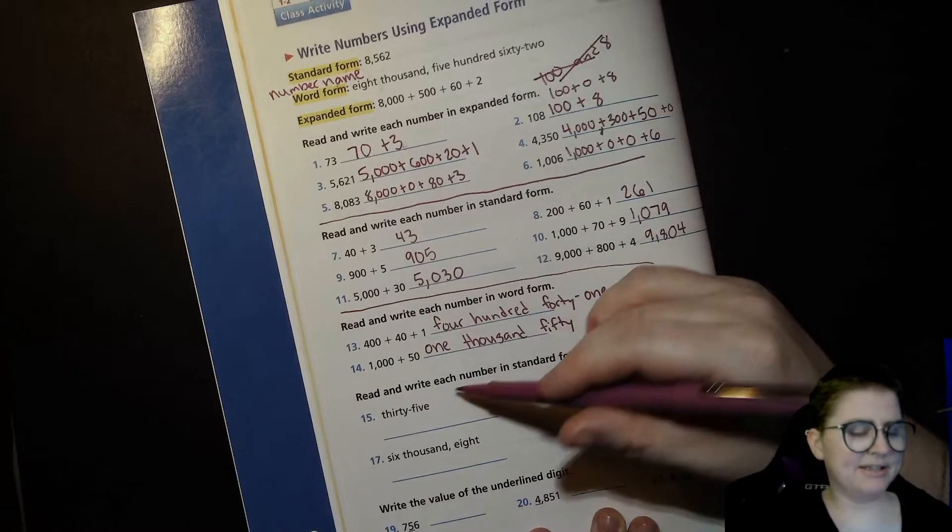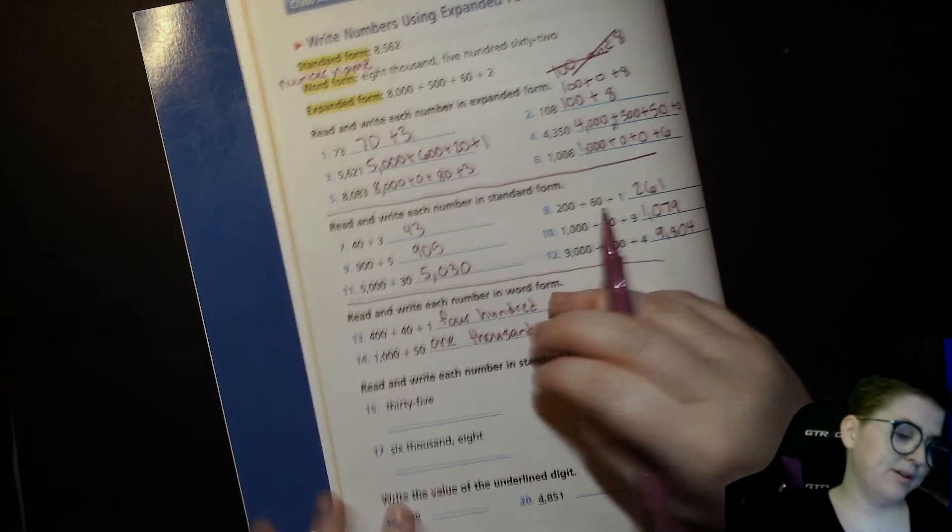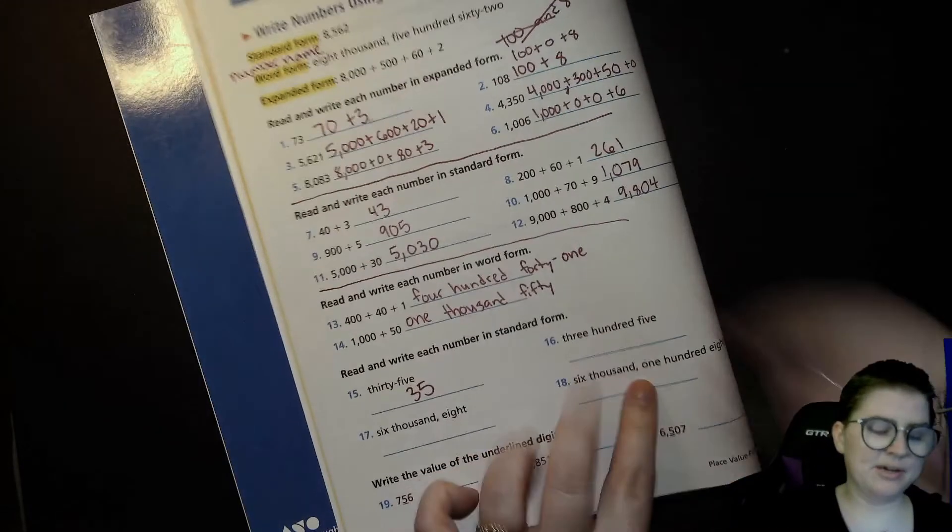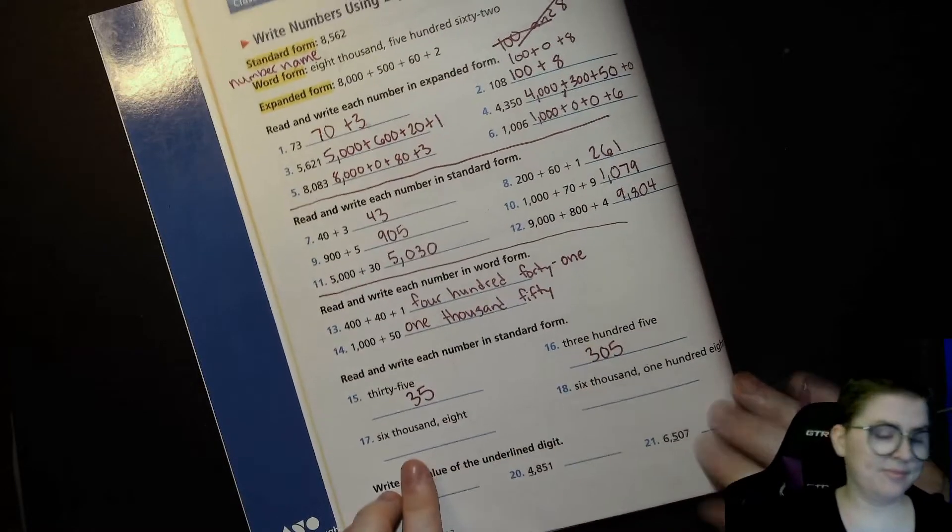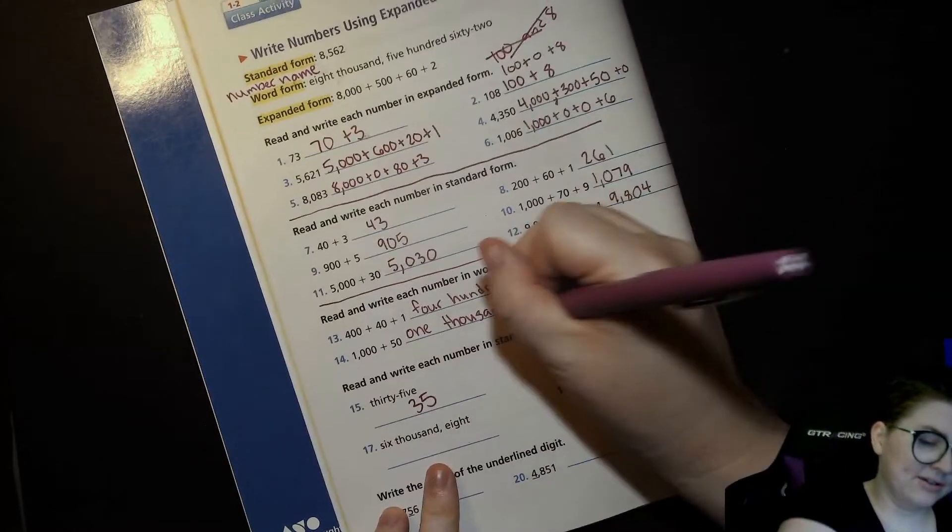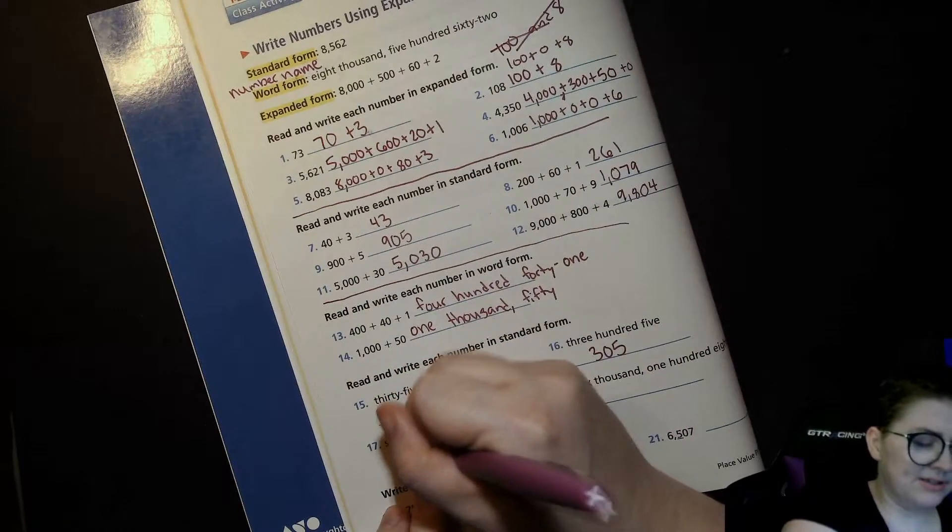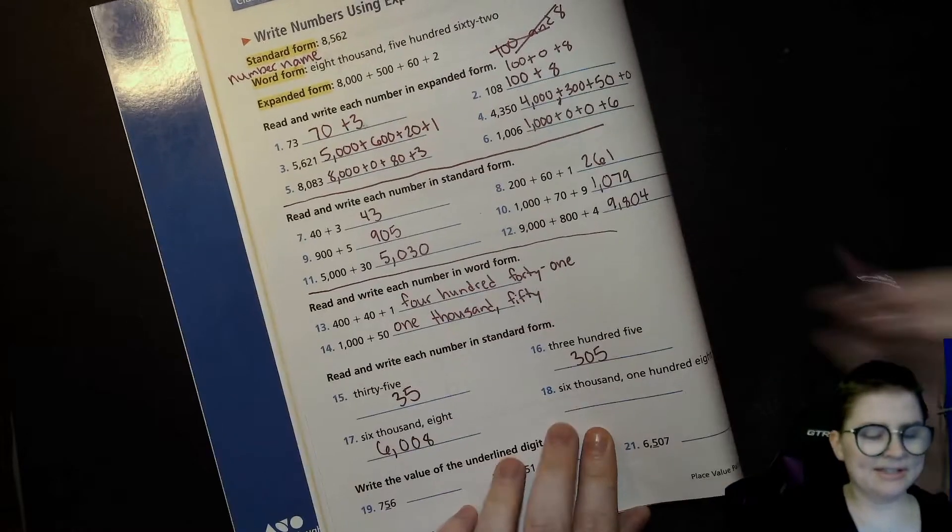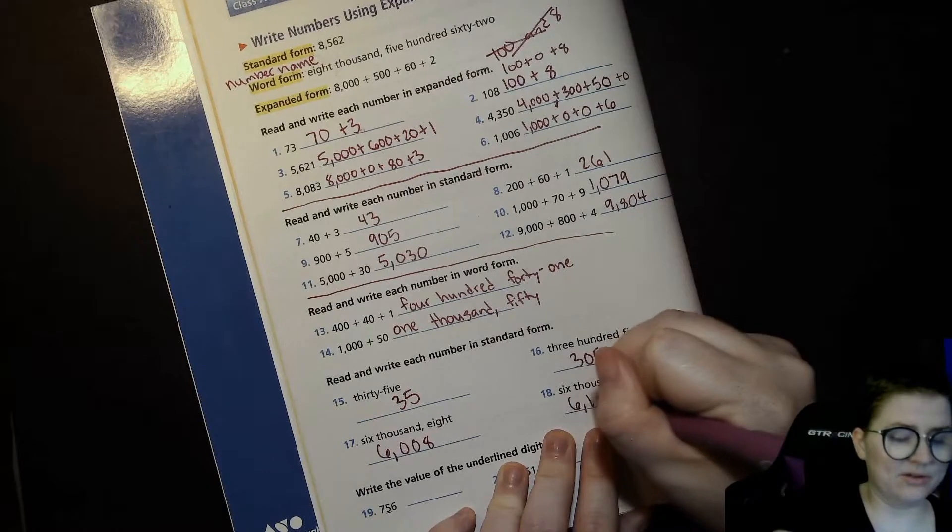Now we're putting these number names or word form numbers into standard form. 35. 305. Six thousand eight: 6,008—got my comma there, 6,000, zero hundreds, zero tens, and 8. Six thousand one hundred eight: 6,000, 100, no tens, 8.